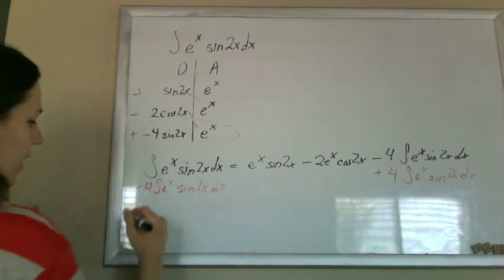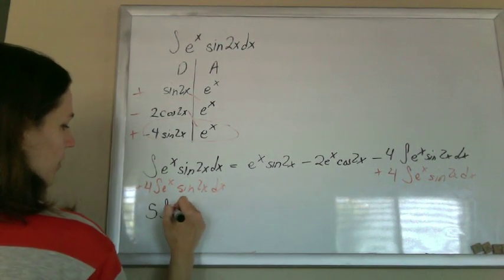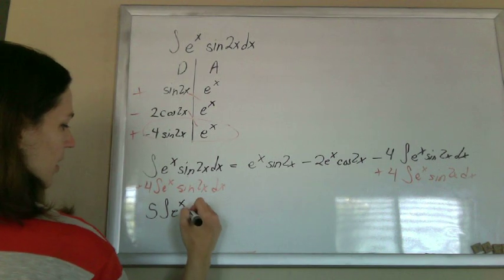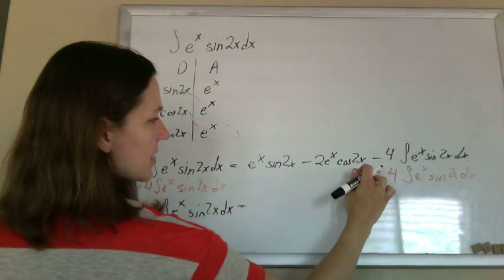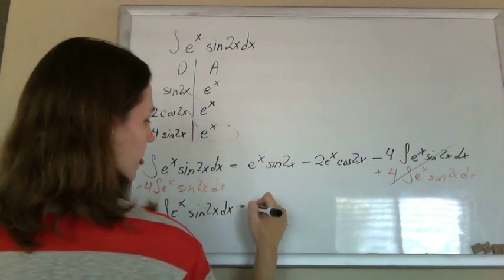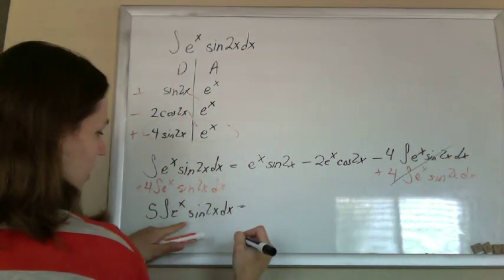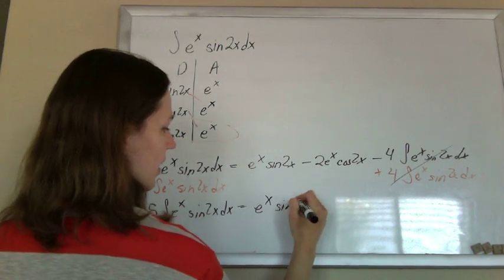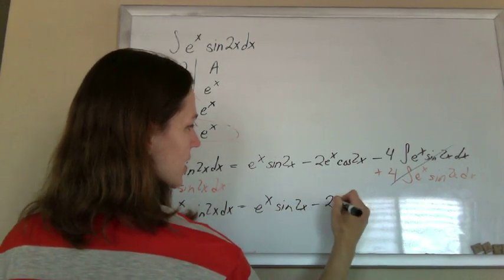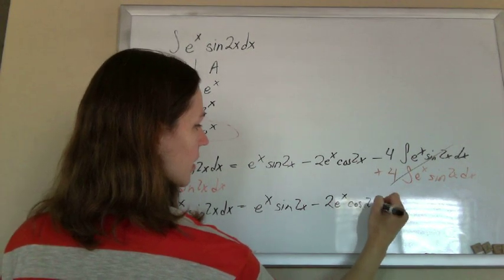So now I've got five of these integrals, e to the x sine 2x dx, equaling the mess that's left behind, because that cancels out. So five integral e to the x sine 2x dx equals e to the x sine 2x minus 2e to the x cosine 2x.